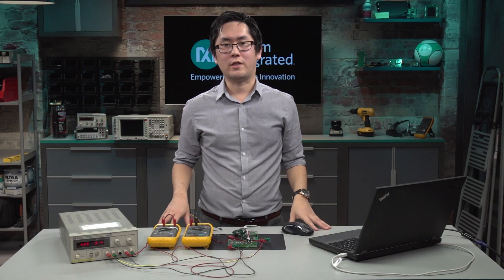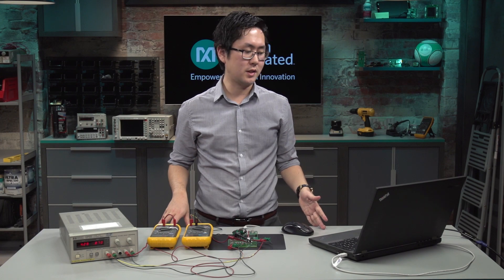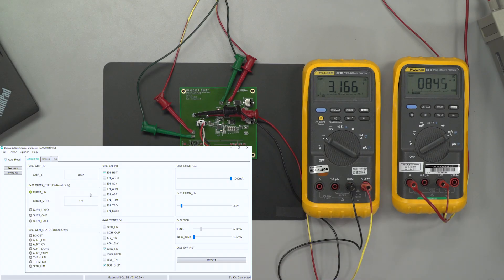So now we've let the battery charge for a bit and we've reached the point where it's crossed from the CC to the CV. So you can see on the GUI in the charger status that it says CV now.